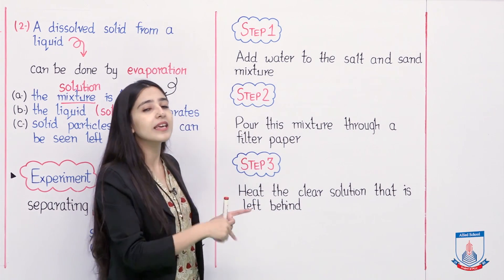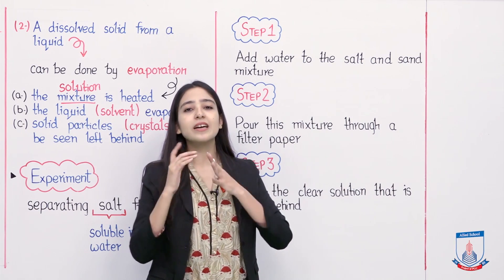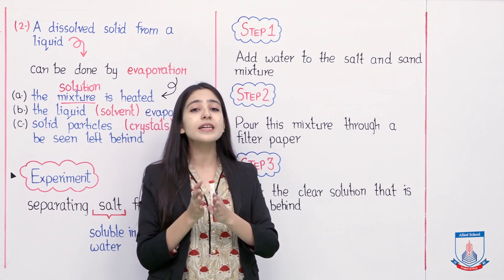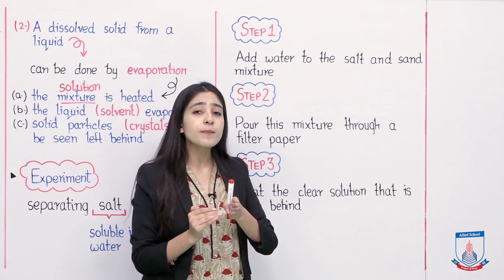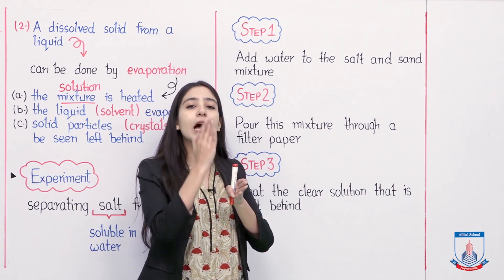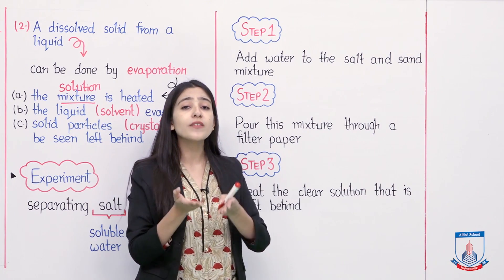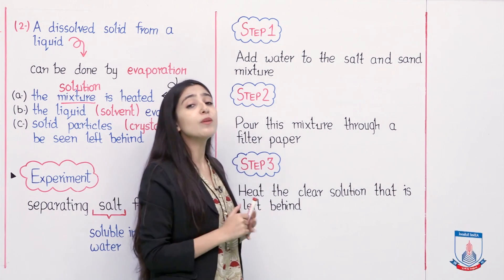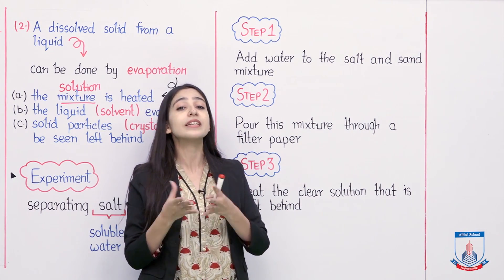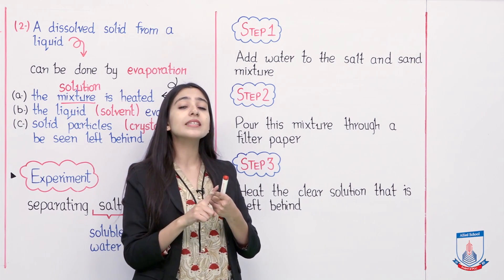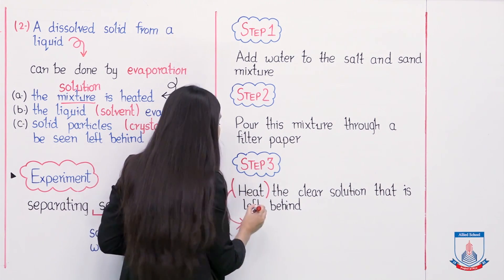Step 2: pour this mixture through a filter paper. The mixture we just prepared by adding water — we pass it through filter paper. The filter paper is being used to separate a suspended solid from the liquid. In this experiment, the sand is our suspended solid particle that will separate from the water. When we pass the mixture through the filter paper, the salt dissolved in water passes through easily as filtrate, while the sand remains as residue on the filter paper. So the sand is already separated. Now it is the turn of the salt to be separated.